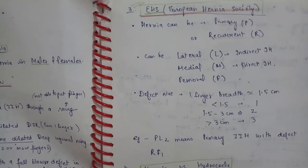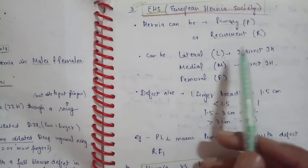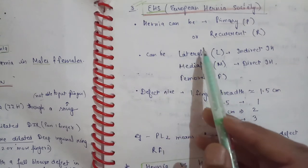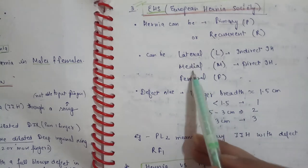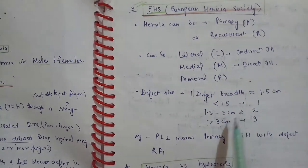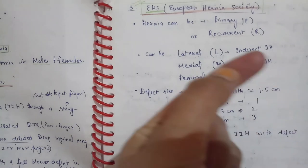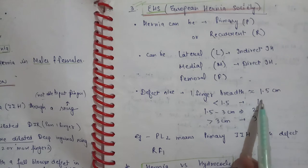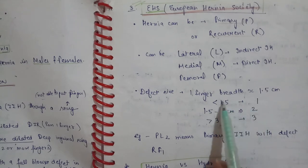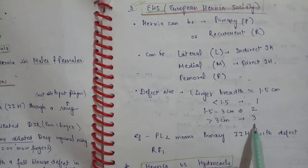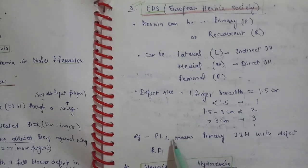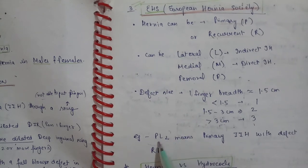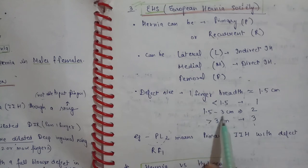The European Hernia Society (EHS) classification divides hernia based on whether it is primary or recurrent, and by location: lateral (indirect), medial (direct), or femoral. Defect size is also classified: less than 1.5 cm, 1.5 to 3 cm, and more than 3 cm. For example, PL2 means primary, lateral (indirect), with defect size 1.5 to 3 cm.